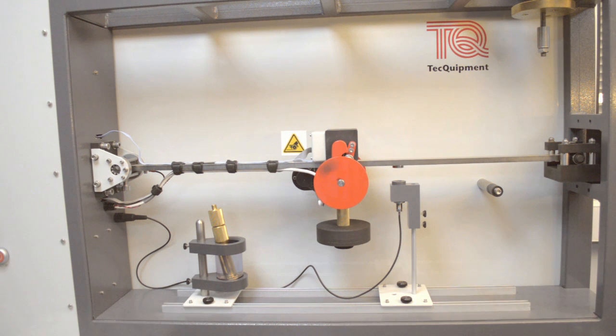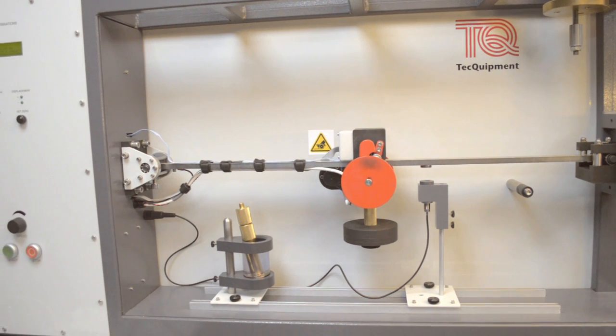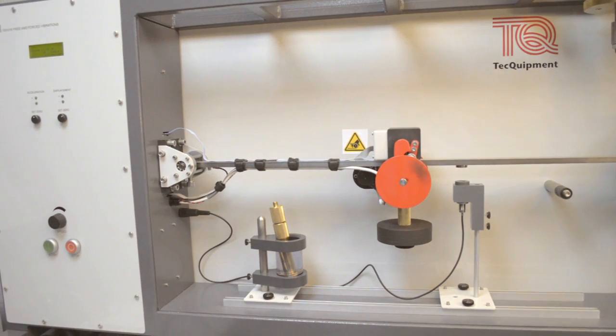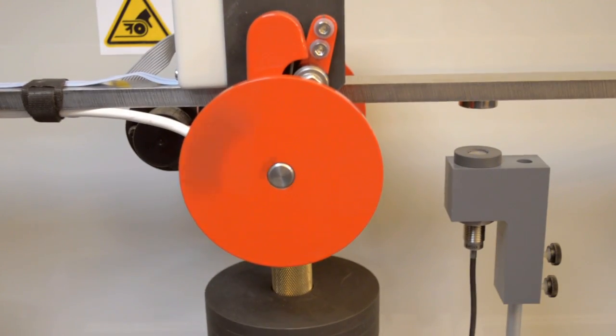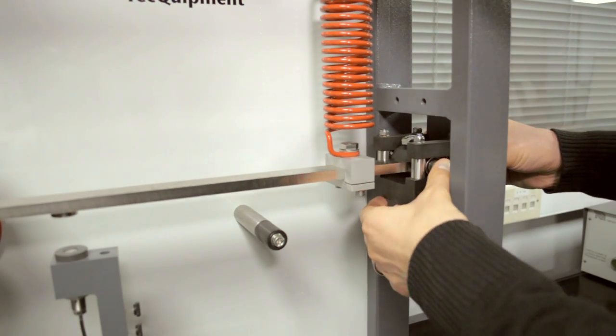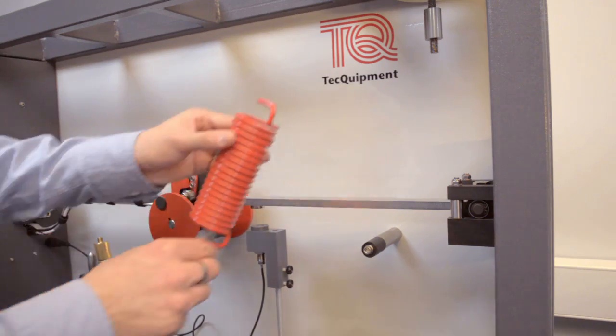Techquipment's Free and Force Vibrations uses a metal beam held as a simply supported beam or supported by a spring. It shows the magnitudes of oscillations due to free and force vibrations in simple structures and how damping affects their vibrations.